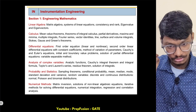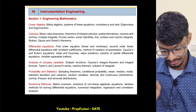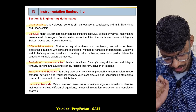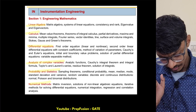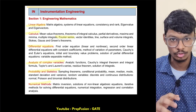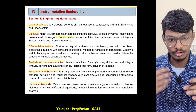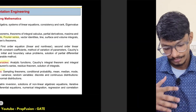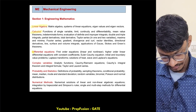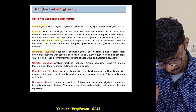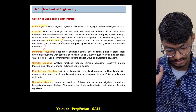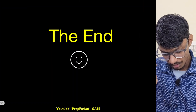For Instrumentation Engineering (IN), you have everything — linear algebra, calculus, differential equations, complex variable analysis, probability & statistics, numerical methods, and transform theory including Fourier series and Laplace transform. That's approximately eight chapters, and you have to study all of them. For Mechanical Engineering also, all eight chapters are required: linear algebra, calculus, differential equations, Fourier series, vector calculus, complex variables, probability & statistics, and numerical methods — no skipping.